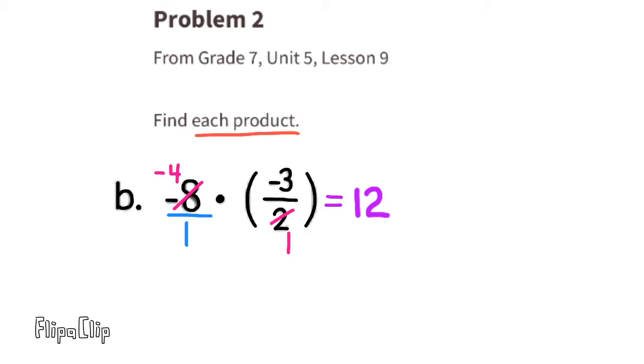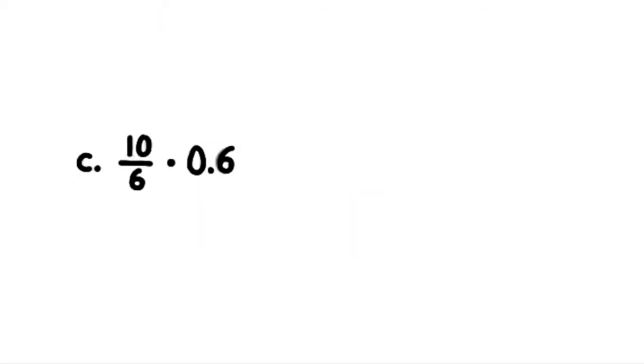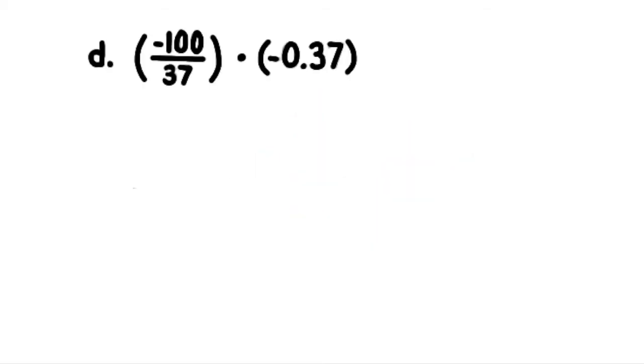On the bottom, 1 times 1 equals 1, so we have positive 12 over 1, which is the same as 12. Part c: 10 sixths times 6 tenths. We can write them both as fractions: 10 over 6 times 6 over 10. We can cross cancel: 6 goes into 6 once and 6 goes into 6 once, and 10 goes into 10 once and 10 goes into 10 once. You can already tell this is going to equal 1.